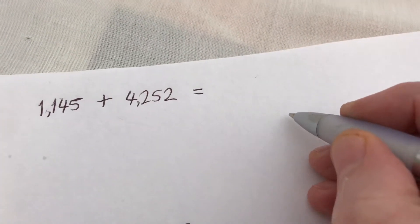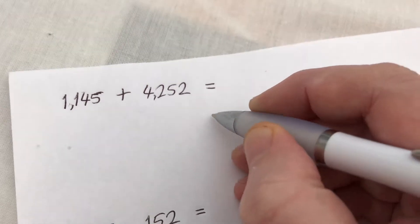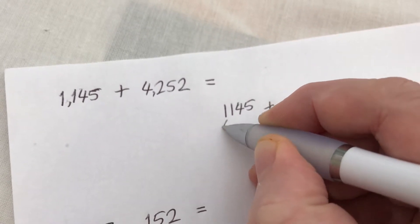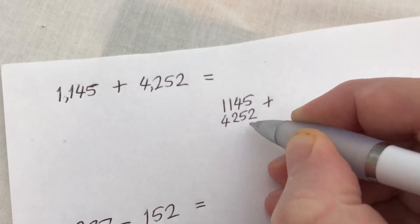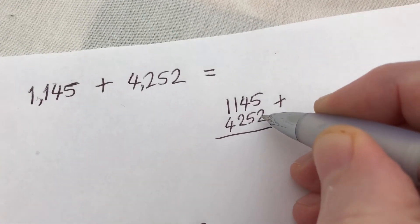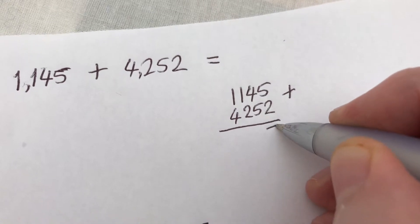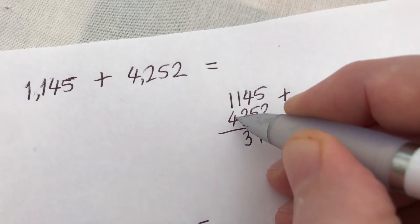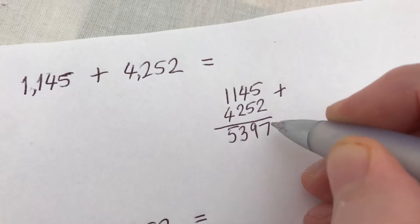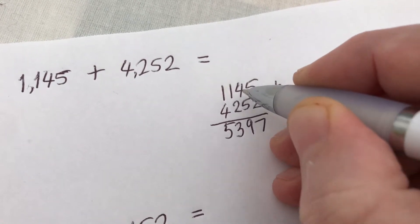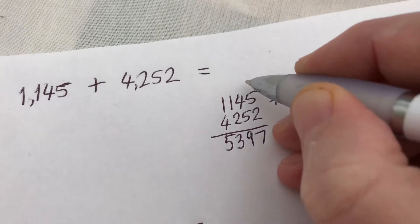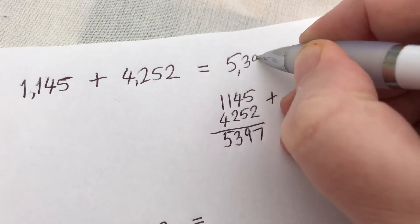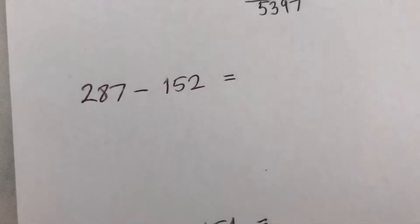The first one, what we'll do is we'll lay it out: 1,145 plus 4,252. We'll draw a line. 2 plus 5 is 7, 5 plus 4 is 9, 2 plus 1 is 3, 4 plus 1 is 5. We wrote it out so that all the units were in line, and the answer is going to be in the line there as well, so it's 5,397.